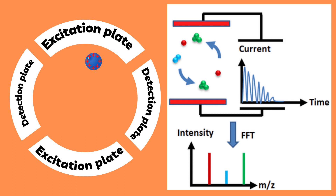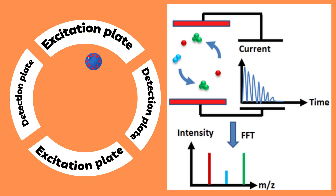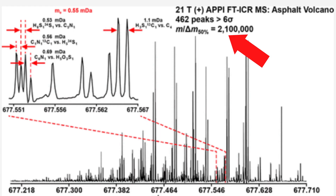The reason why FT-ICR achieves such high resolution is that every revolution — in other words, each time the ion completes a spin in the device — we get another point of measurement. This results in an incredibly high resolution, in fact even above two million, which is just beyond anything we've seen on any of these other mass spectrometry devices.